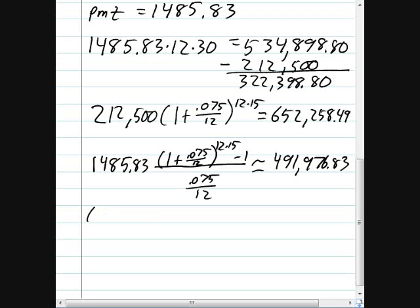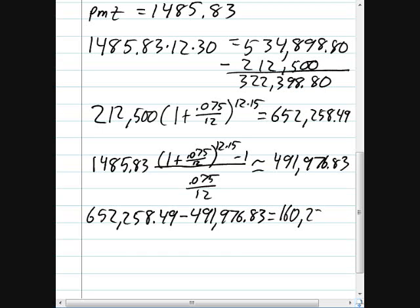So if we take the $652,258.49 that they expect to have earned, and subtract off the $491,976.83 that our annuity payments are worth at the end of the 15 years, we find that we still owe $160,281.66 on our loan. Which if we subtract that from the original loan amount, we find that we've only really paid $52,218.34 on our loan. Not very much for having paid for 15 years.